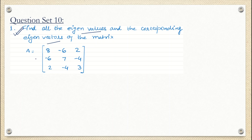Here is the matrix given to us. This matrix is A and we can see that this is a 3×3 matrix, so the order of matrix is 3×3.